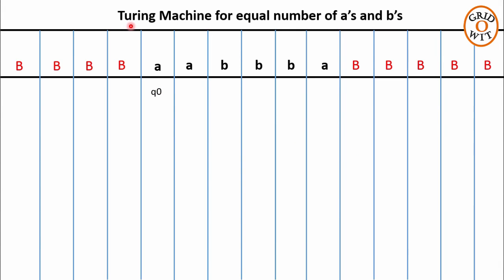Now let us take one more example to see how many states we require to design this Turing machine. In this string, we have three As and three Bs. At state q0, the machine is reading the first symbol, that is A. q0 will replace this A with X, takes a right move, and changes its state to q1.